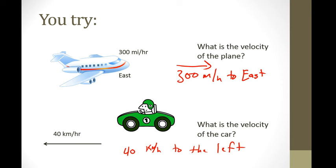We have a description of the speed - we have 300 miles per hour, we have 40 kilometers per hour. And then we have a description of the direction that it's going. We're going east or we're going to the left. So those are velocity vectors.